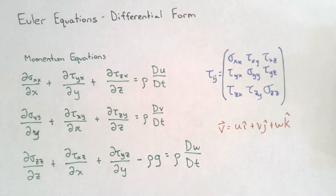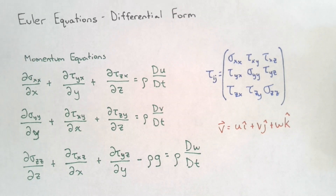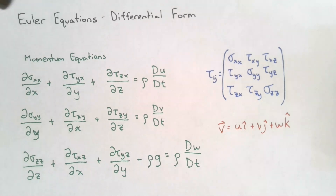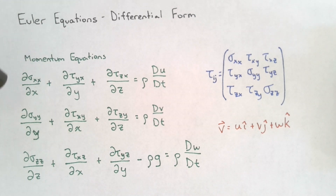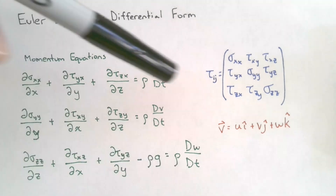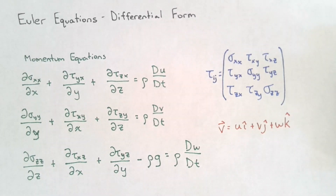For the past couple of lessons we've derived general formulations of the continuity and momentum equations, however we haven't really looked into some of the more detailed equations such as Euler's equations and Bernoulli's equation. In this video we're going to derive Euler's equation in the differential form. We've already derived this equation using the integral formulation, but now we're going to start by using the general momentum equation in its differential form.